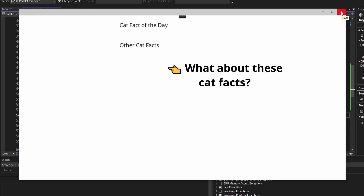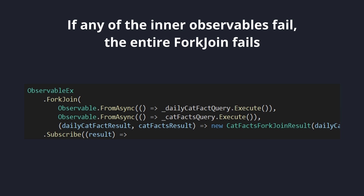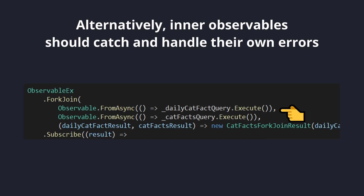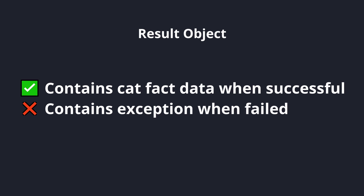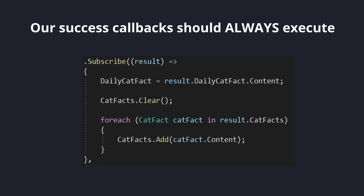However, only the daily cat fact query failed, so ideally I would still show the cat fact listing data since that query succeeded. And that really sums up one of the issues with ForkJoin: if any of the inner observables fail, then the entire ForkJoin fails and we don't get to see any of the results from any of the inner observables. So alternatively, instead of our inner observables throwing exceptions, let's catch exceptions and use a result object. This result object, if our cat fact query succeeds, will contain the data, and if the query fails and throws an exception, it'll contain the exception. Our inner observables are going to catch errors so that our outer ForkJoin does not entirely fail for one observable failing, and we'll still be able to handle any errors since we'll receive them in our observer.